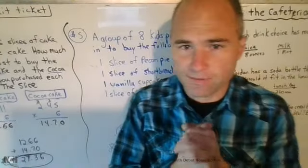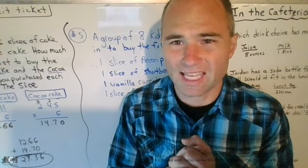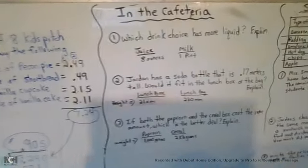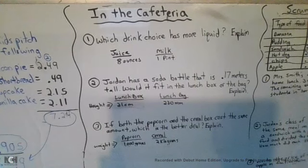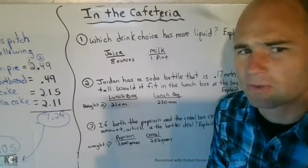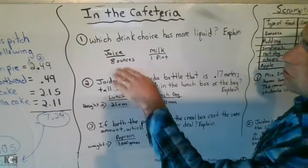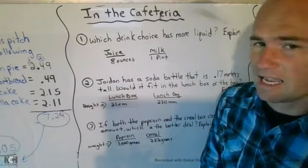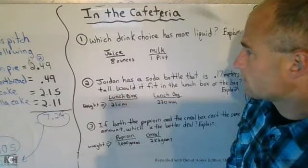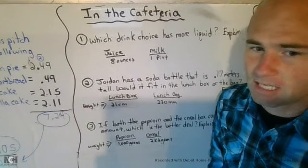Let's go ahead and have some fun on day 35. We're going to start off in the cafeteria. What do you mean by that, Mr. Brisbane? Here we go. First question: Which drink choice has more liquid? Which drink choice is going to have more liquid? Juice? That is an eight-ounce juice box. Or one pint milk? Let's think about that.